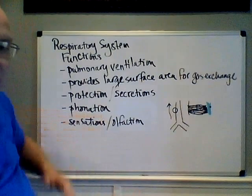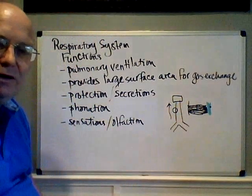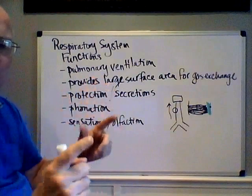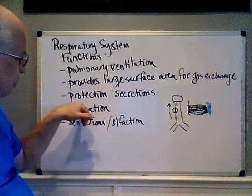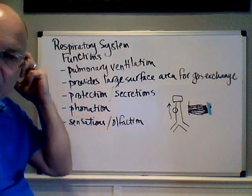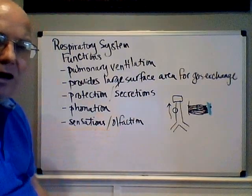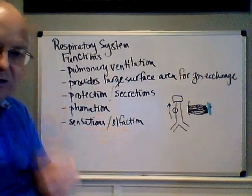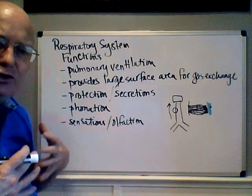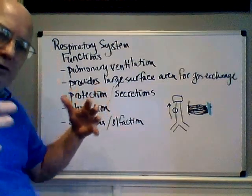Another function is phonation. A part of your respiratory tree at the very top of the trachea is a little box called the voice box, or larynx, and that's where your vocal cords are. Muscle contractions move the vocal cords, creating vibrations of air which make sound. Your respiratory tract is responsible for phonation — making sounds which we can shape with our tongue and other movements to speak. Finally, there are sensations. The respiratory tract has a sensory part — not just olfaction, the sense of smell, but also stretch and baroreceptors in the lung that detect stretch and pressures so we don't over-inflate or over-deflate the lungs.